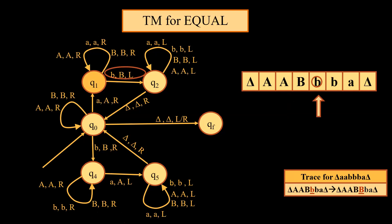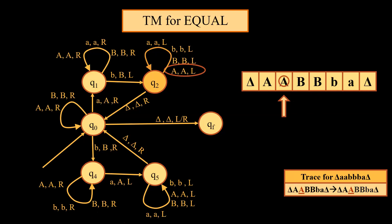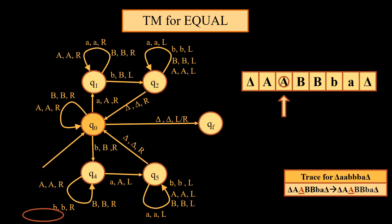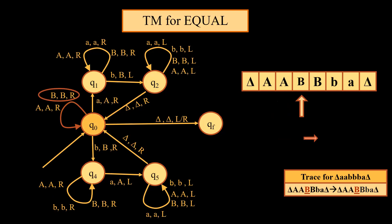The moment we come across small b, we convert it into capital B and the head starts moving towards the left side to find the end marker delta. All intermediate inputs — small a, capital A, small b, and capital B — will not change. Once we reach delta, the left side marker, we change direction and start traversing without changing any input. If it is capital A it remains capital A; if it is capital B it remains capital B. The head moves one step right after traversing each cell.